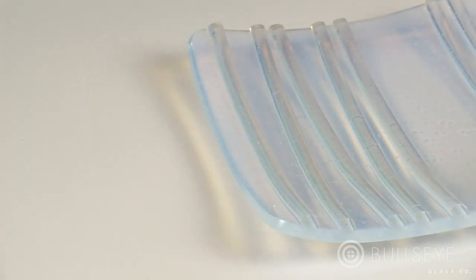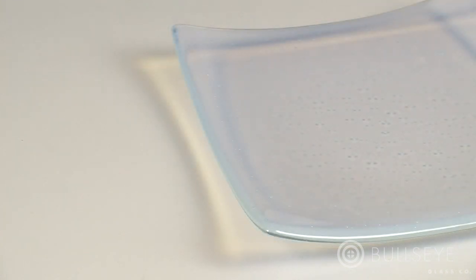Glass thickness plays a role in determining a firing schedule. Heat thicker pieces more slowly, especially those with varying thicknesses, to promote uniform heating and avoid thermal shock. Also, thicker pieces due to their greater mass may slump at lower temperatures than thinner ones depending on the mold.